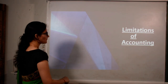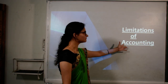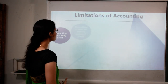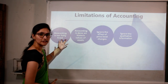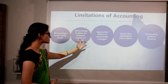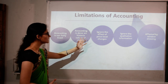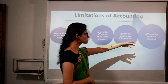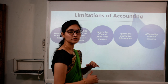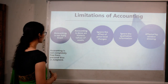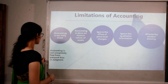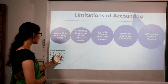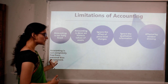Limitations of accounting. The limitations are: first, accounting is not fully exact; second, accounting is done on historic values of assets; third, it ignores the effect of price level changes; fourth, it ignores qualitative information; and last, it is affected by window dressing. Accounting is not completely free from personal bias or judgment.